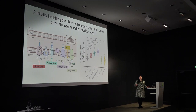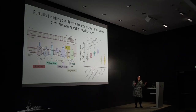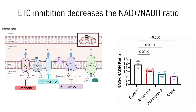Applying an ionophore that collapses the proton gradient so it cannot be used for ATP synthesis also had no effect on the clock period. This suggests that the role of metabolism in regulating the segmentation clock is not through ATP production, but through another function of the chain itself. It turned out to be the regeneration of NAD from NADH to maintain redox balance. With each inhibitor applied, there is a progressive reduction of the NAD/NADH ratio — a progressive accumulation of NADH — which may be causing the segmentation clock to slow.